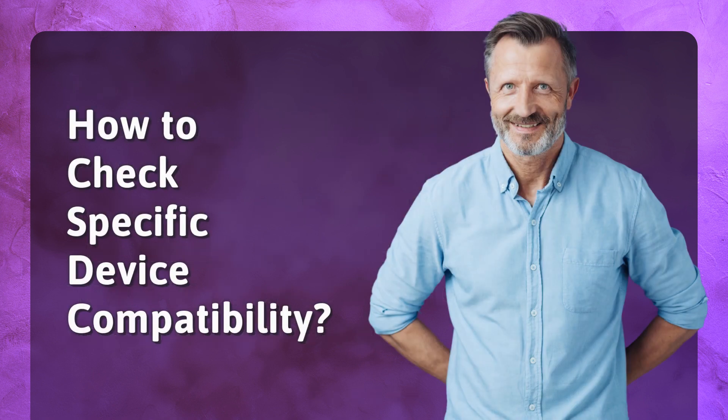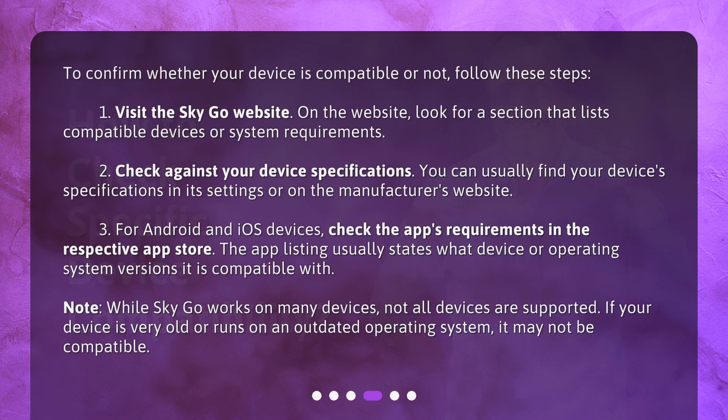How to check specific device compatibility? To confirm whether your device is compatible or not, follow these steps. First, visit the SkyGo website and look for a section that lists compatible devices or system requirements. Second, check against your device specifications — you can usually find your device's specifications in its settings or on the manufacturer's website. Third, for Android and iOS devices, check the app's requirements in the respective app store. The app listing usually states what device or operating system versions it is compatible with.